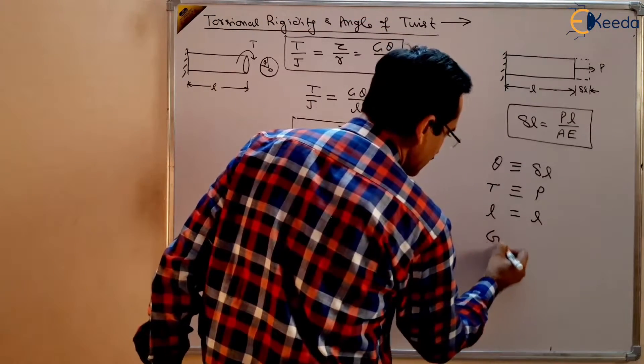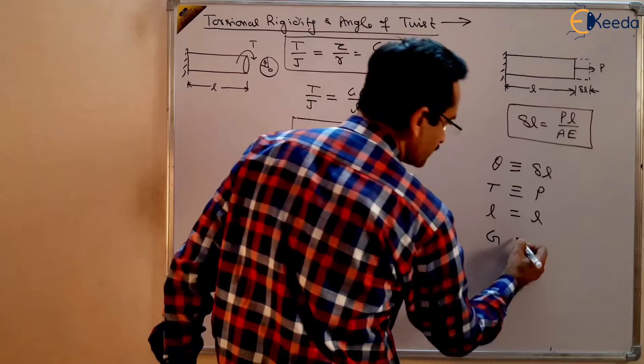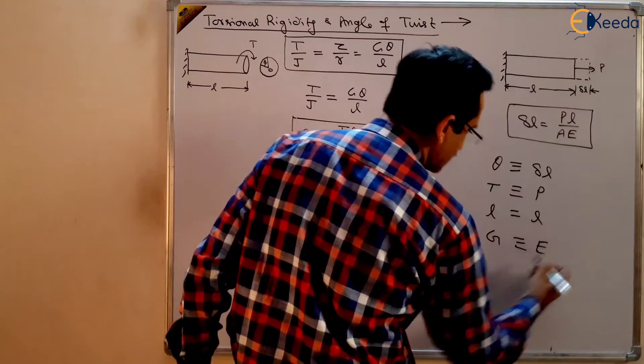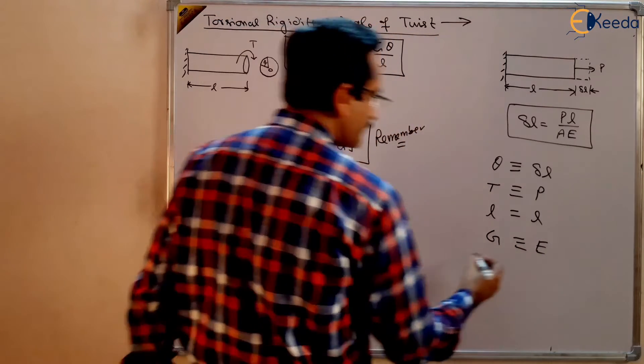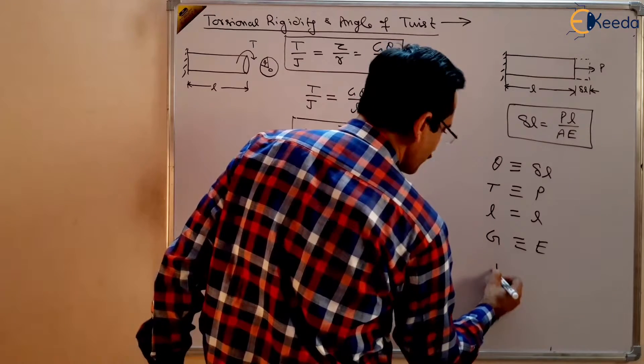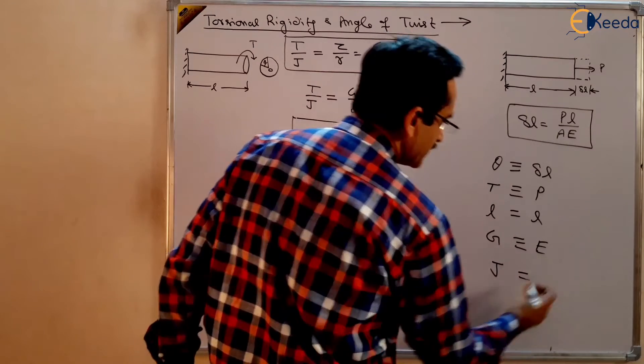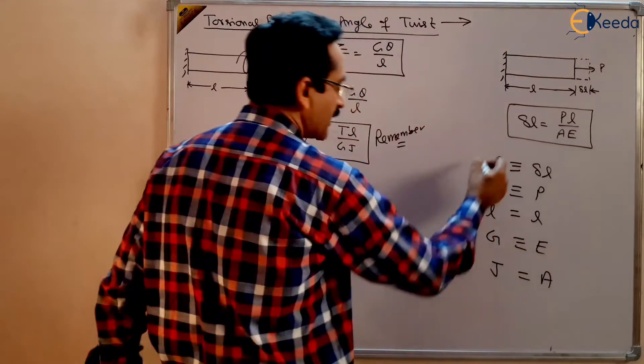The modulus of rigidity is analogous to modulus of elasticity, and J, polar moment of inertia, is analogous to the area.